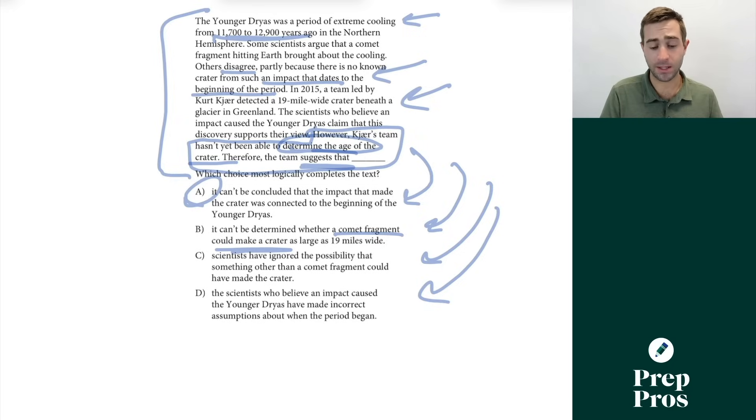Scientists have ignored the possibility that something other than a comet fragment could have made the crater. Same general issue there in C. The scientists who believe an impact caused the Younger Dryas have made an incorrect assumption about when the period began. We never have evidence of this in the passage. It's about not knowing when an impact occurred around it. That's why A is our correct answer.